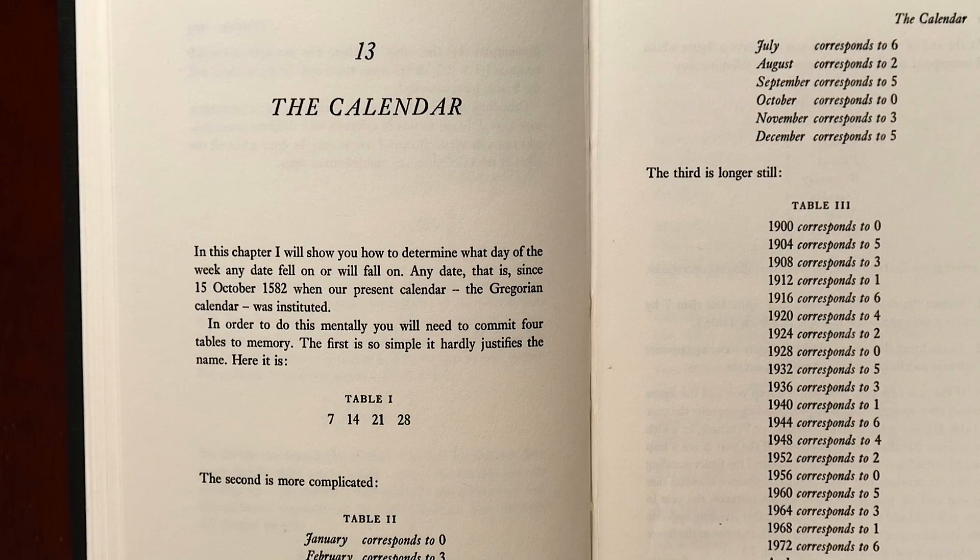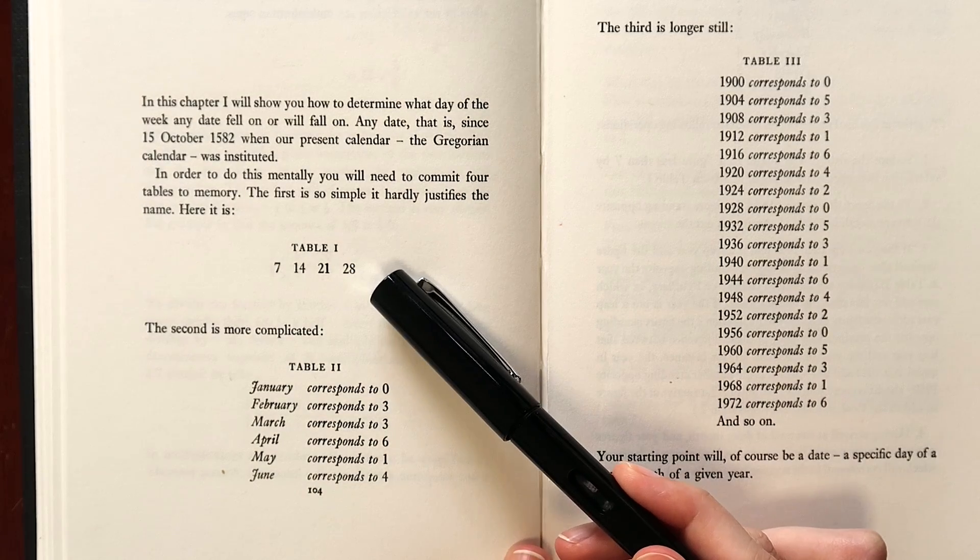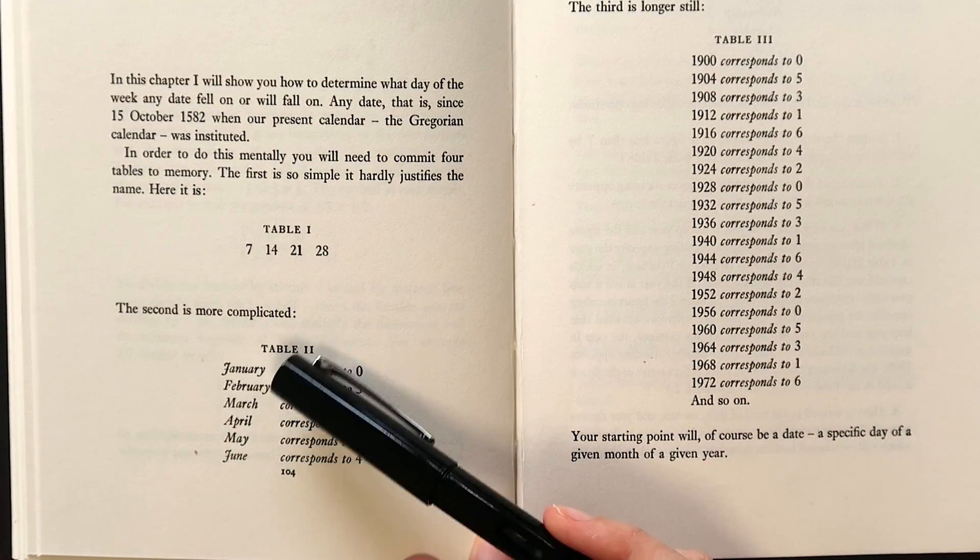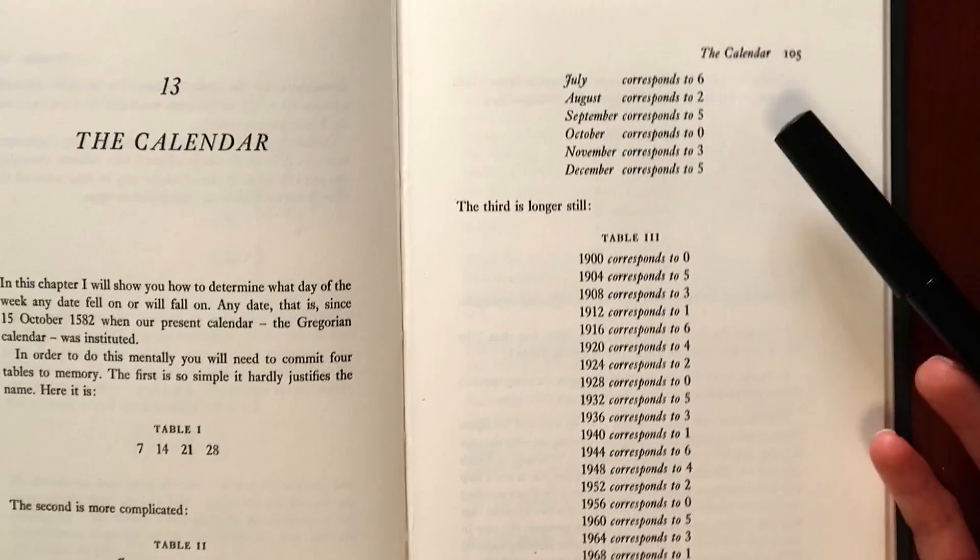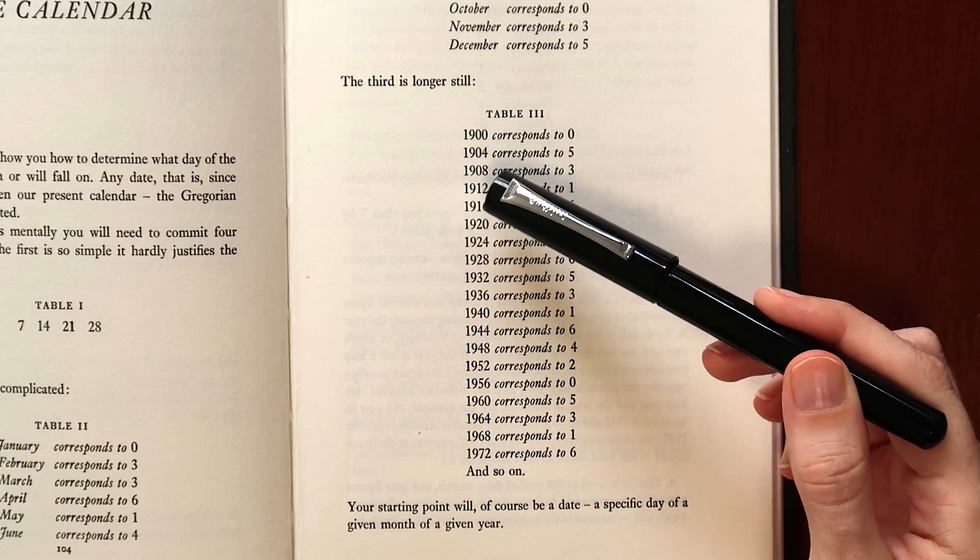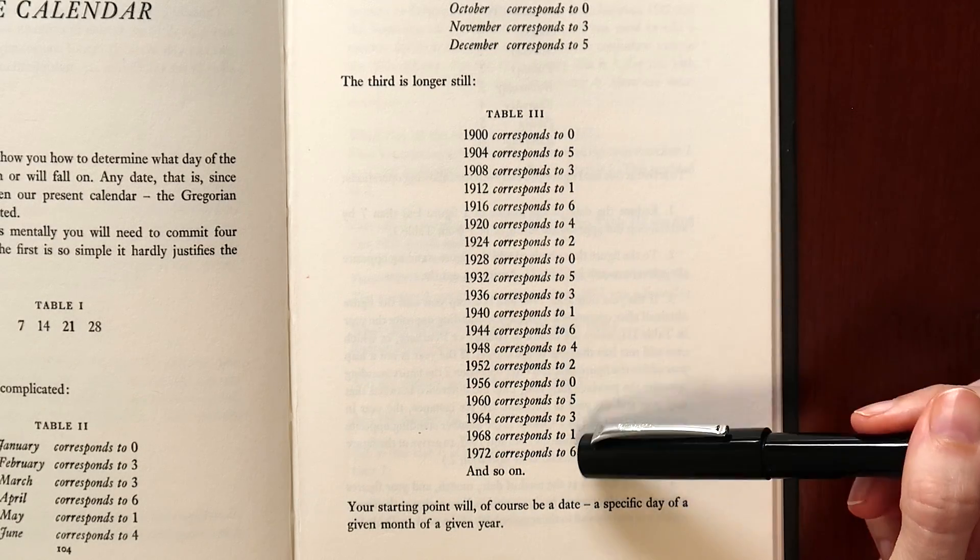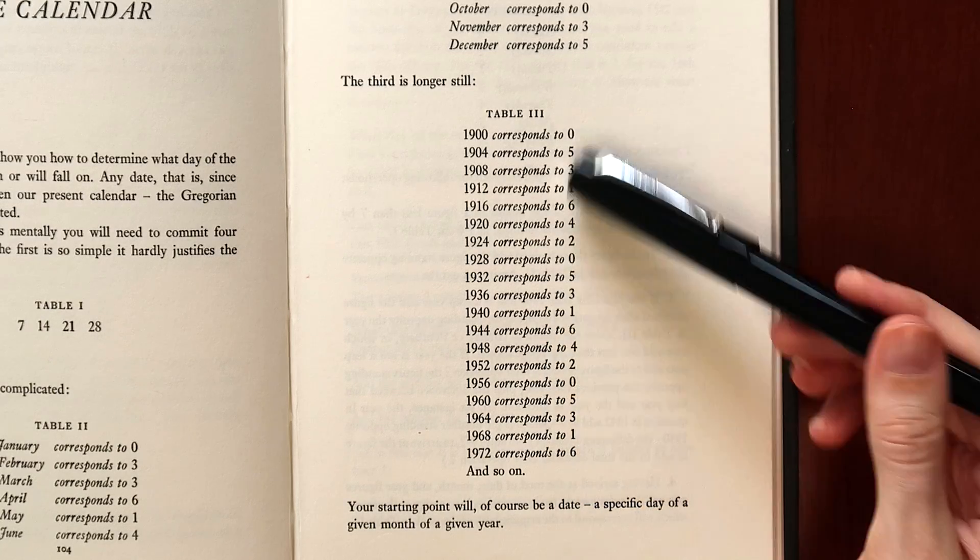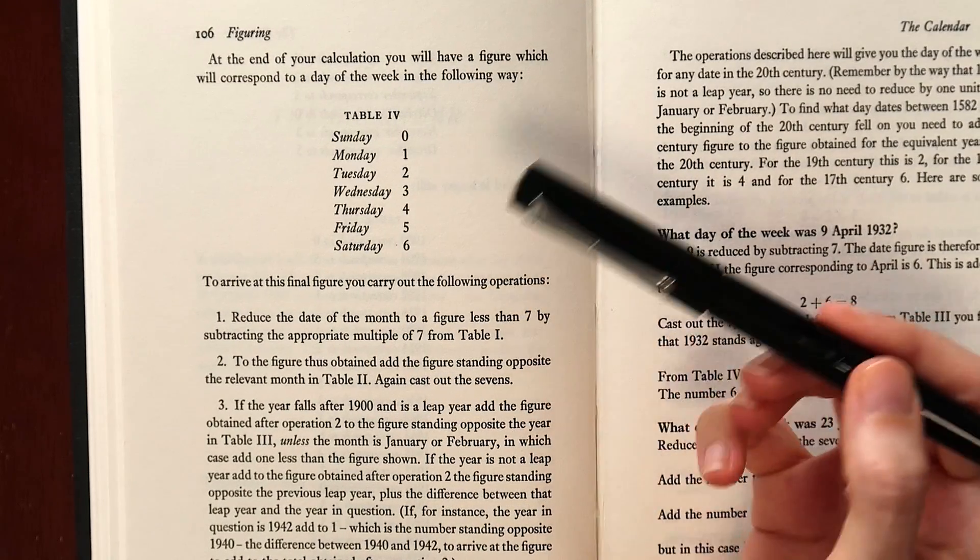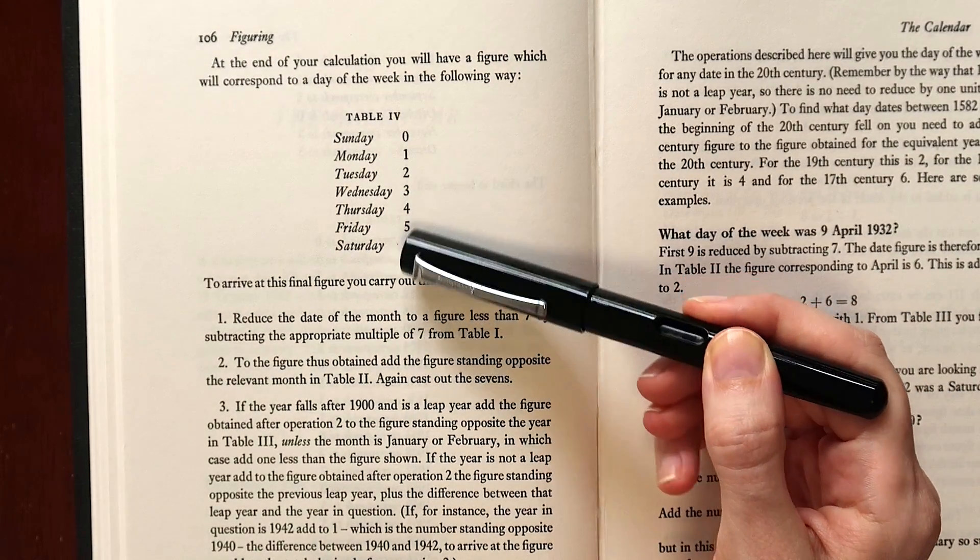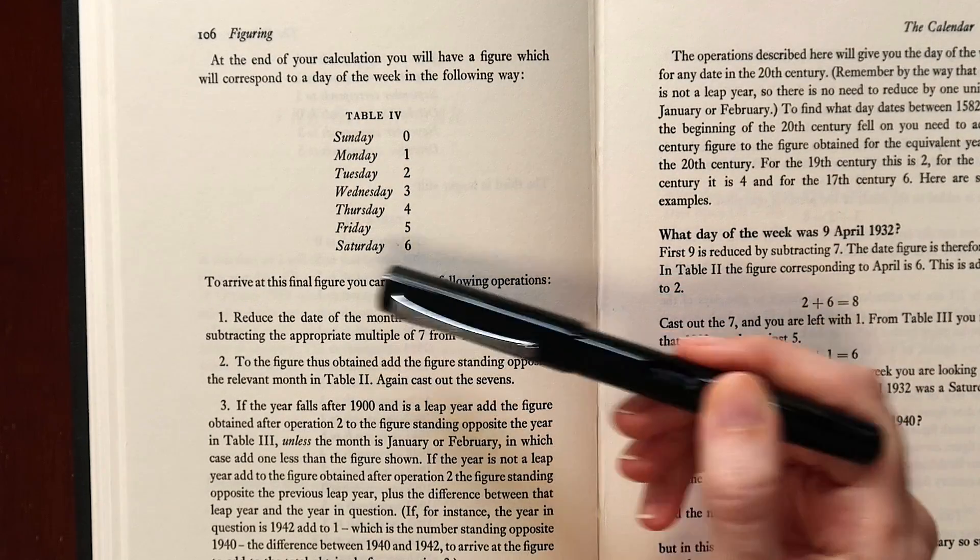She says that you'll need to memorize four tables. Table one, which is a few multiples of seven. The second, which corresponds each month to a digit. And the third table, which takes each fourth year. Maybe these are leap years, I'm not sure. And corresponds them to a digit as well. And this table repeats. So you only need to really memorize a section of it. And there's a fourth table here, which will turn the result of our calculation, which will be a number from zero to six into a corresponding day of the week.